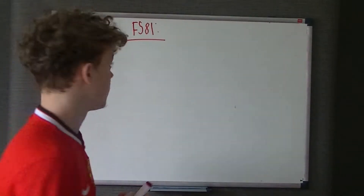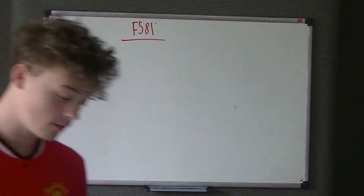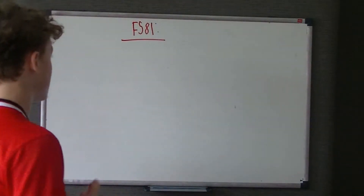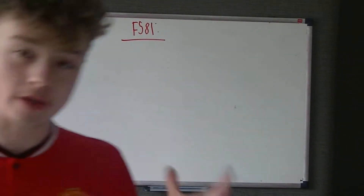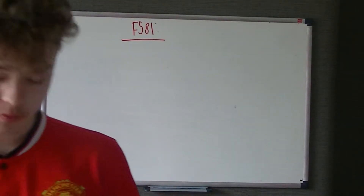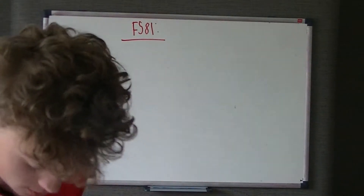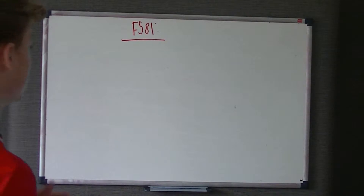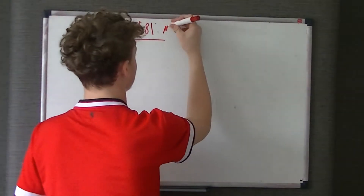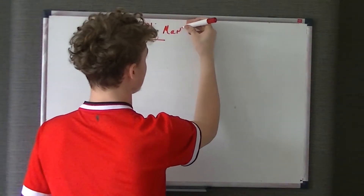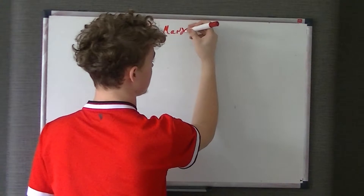What we're going to be starting today is F581. This is the first course in terms of the economics videos I'm going to be doing, even though I've already uploaded F582, which is kind of a pain really. The first thing we're going to be doing is something called market failure, and this is mainly to do with inefficiency.